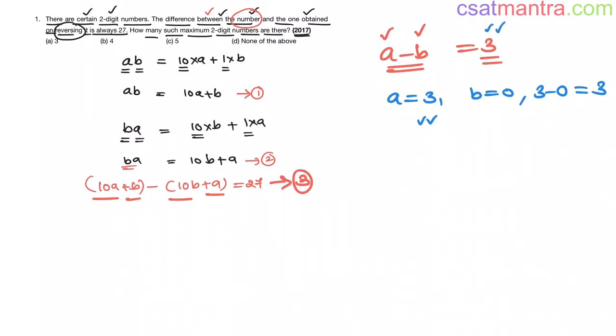A cannot be 0 because if A is 0, this two-digit number will become a single-digit number. So A cannot be 0.